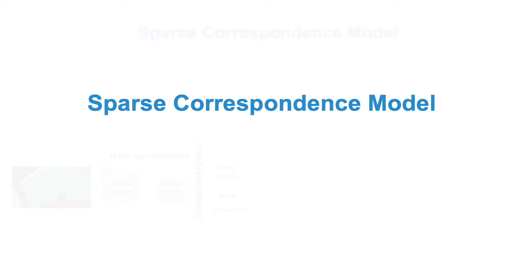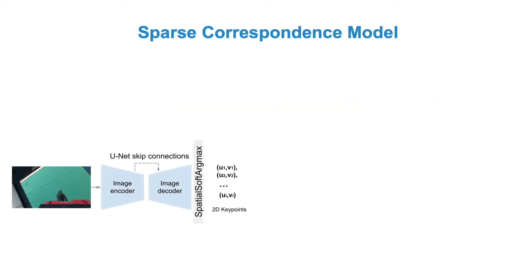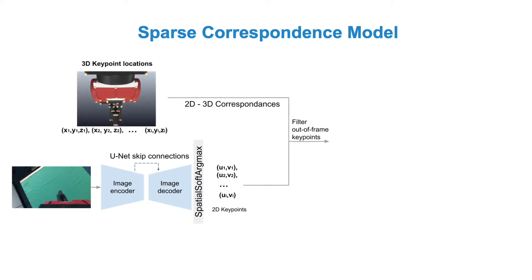Secondly, a sparse correspondence model that predicts the 2D image locations of predefined 3D landmarks and uses these to establish 2D-3D correspondences. With these correspondences the PnP algorithm can finally be used to obtain the camera to end effector transformation.